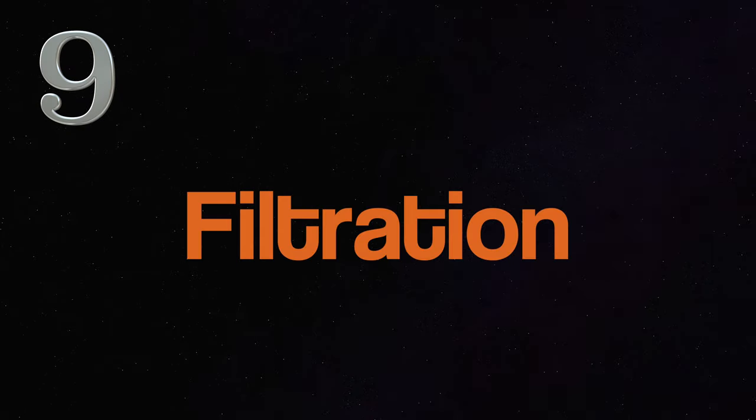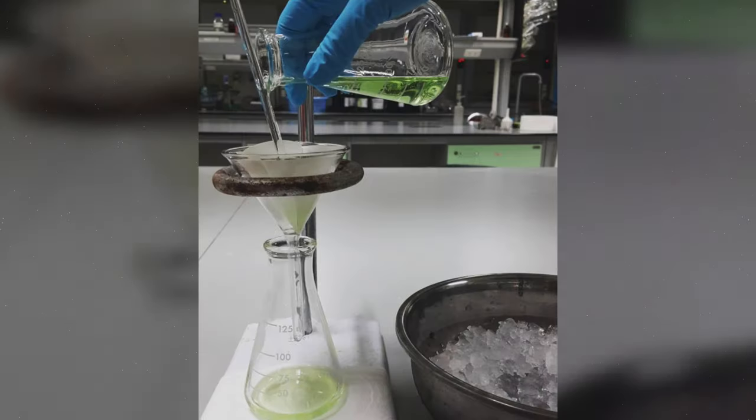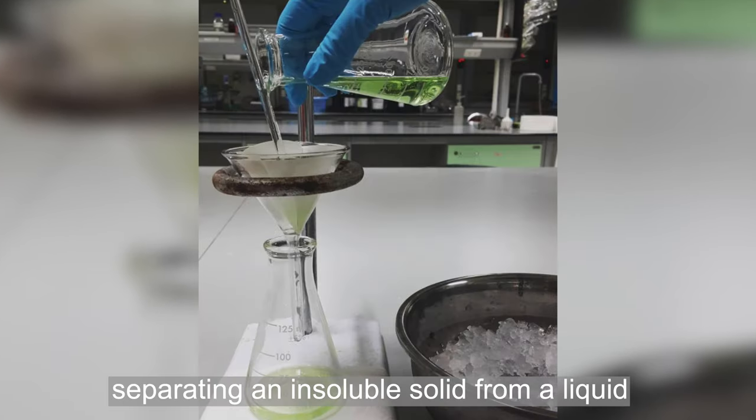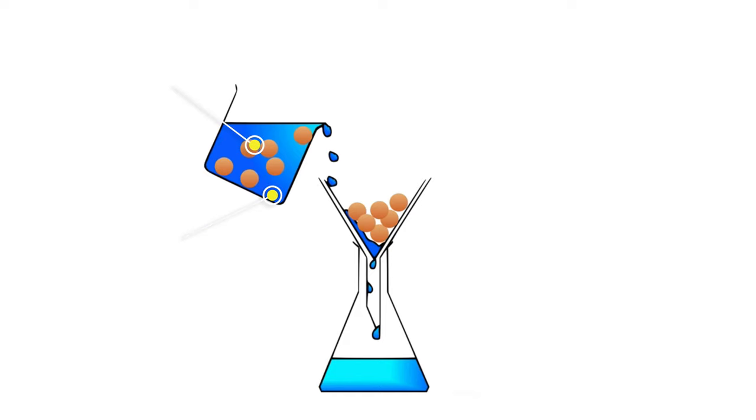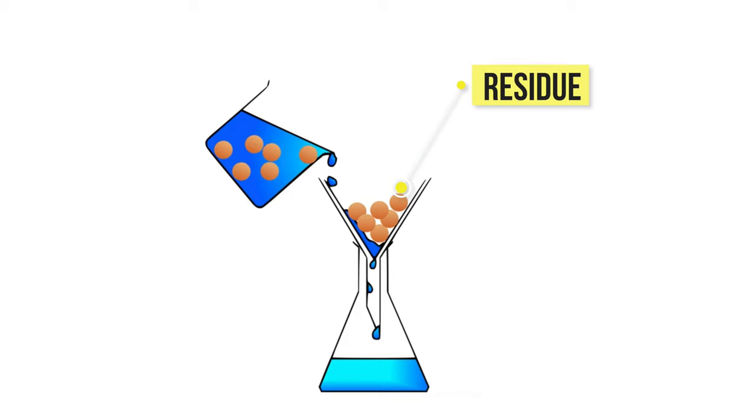Number 9. Filtration. Filtration is a method for separating an insoluble solid from a liquid. Take, for example, the mixture of sand and water. When a mixture of sand and water is filtered, the sand stays behind in the filter paper and becomes the residue. The water passes through the filter paper and becomes the filtrate.